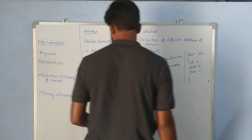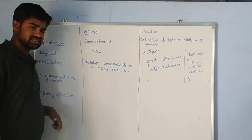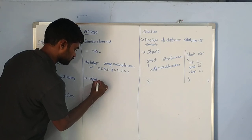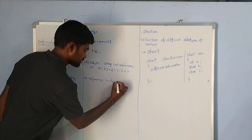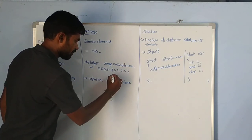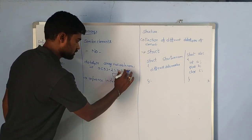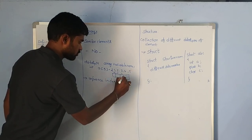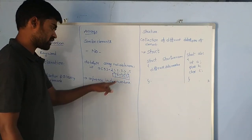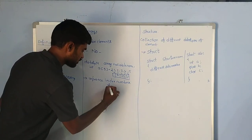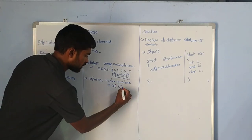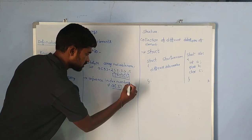How do we access the elements of an array? By using reference index numbers. For example, if we have elements 1, 2, 3, 4, 5 stored at index positions 0, 1, 2, 3, and 4 — and we want to access the element 4 — we use the index number a[3], which fetches or accesses the value 4.